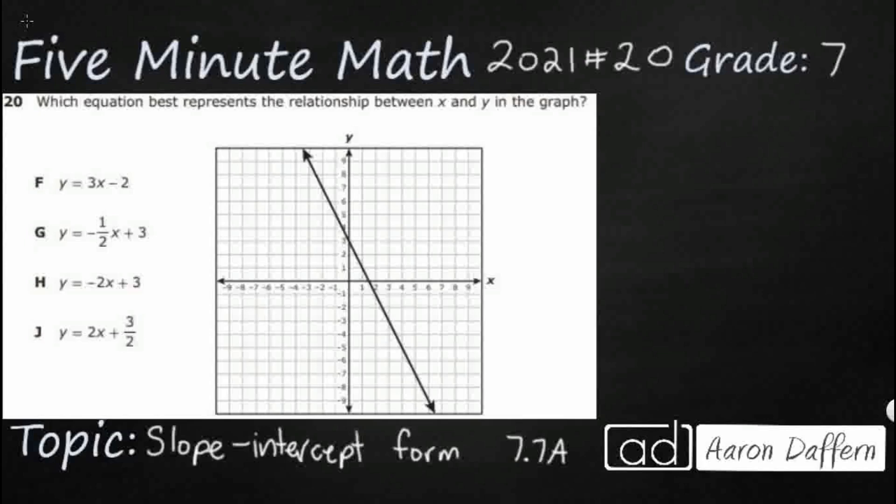Hello and welcome to 5-Minute Math. Today we are looking at the 7th grade concept of slope intercept form. This is standard 7.7a in the great state of Texas and we are using item number 20 off the 2021 released STAR test.